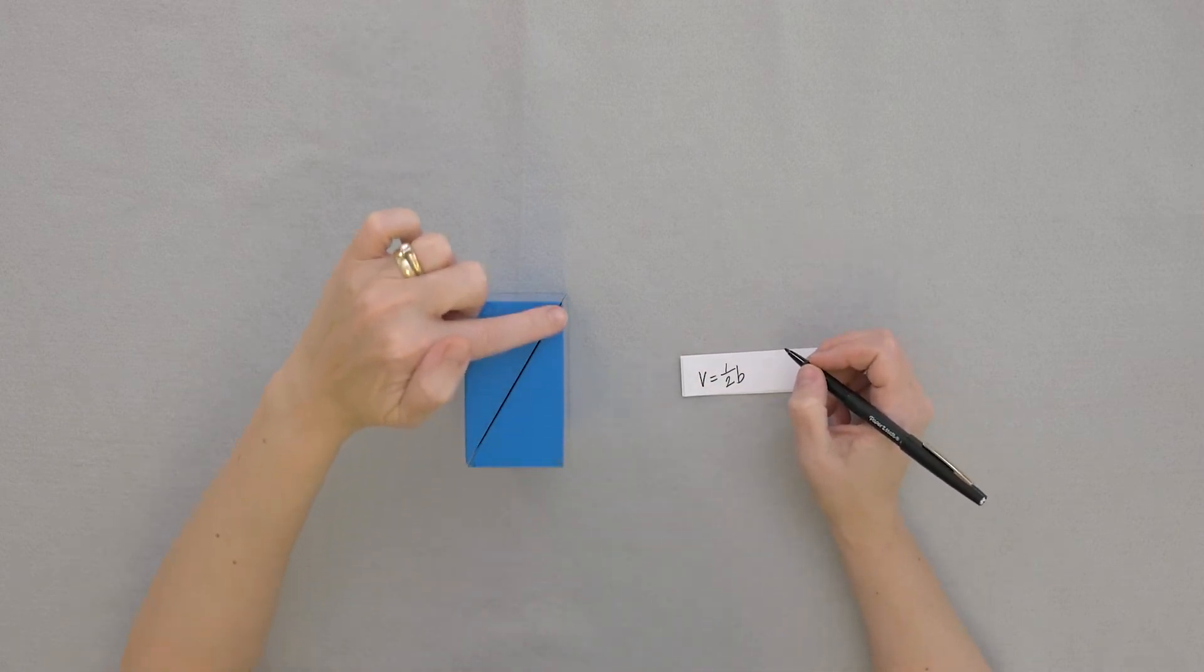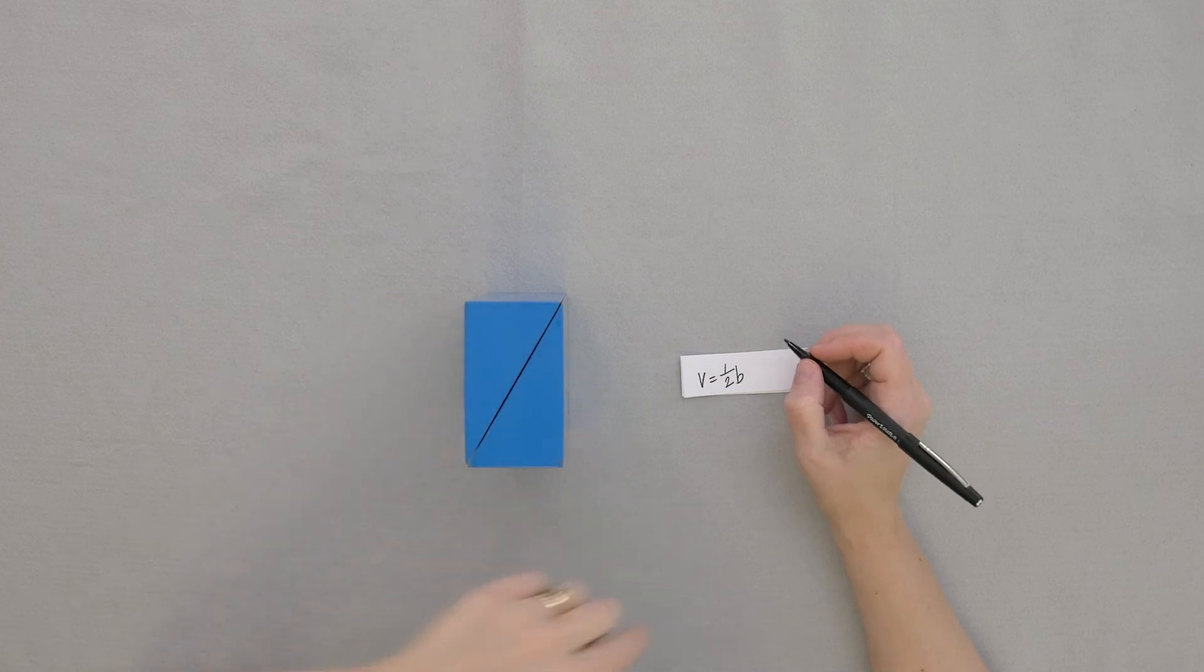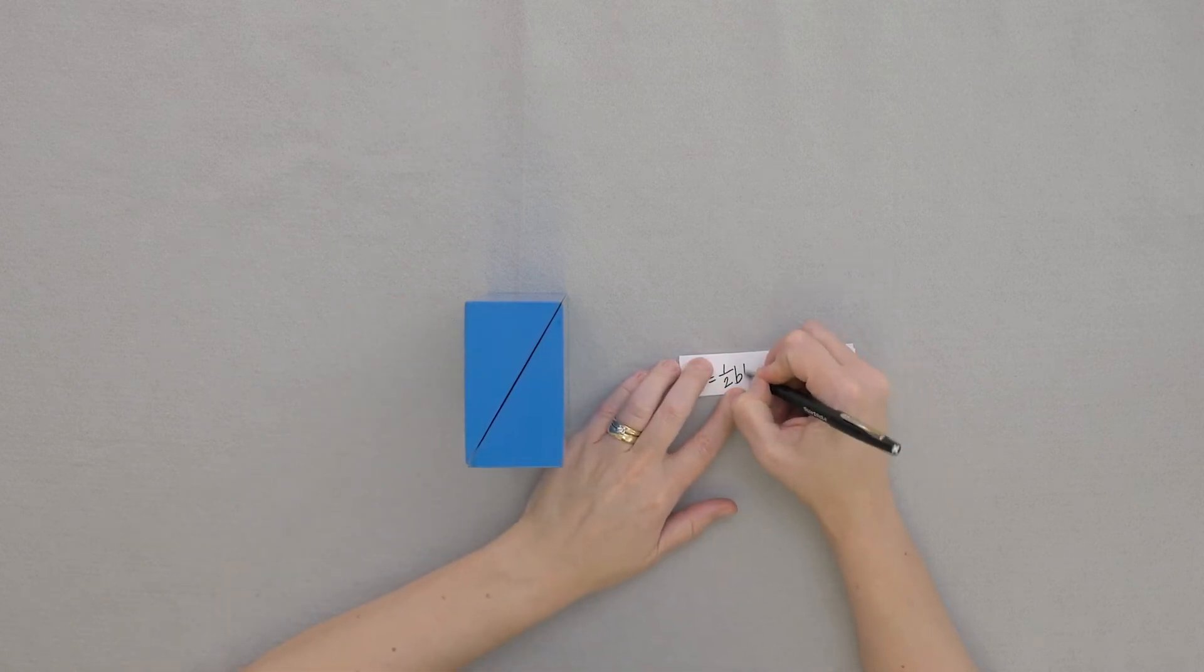And the height here of this rectangle is the height of the triangle. So we can multiply by that height.